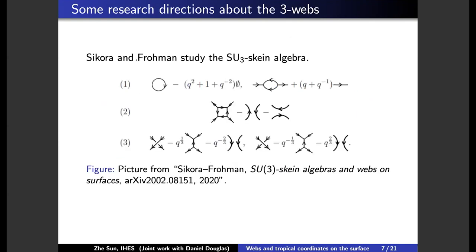And then because it's a graph, you can think of its skein algebra on the surface. So Sikora and Frohman studied SL-3 skein algebra on the surface. These are links of graphs on the surface with some relations.